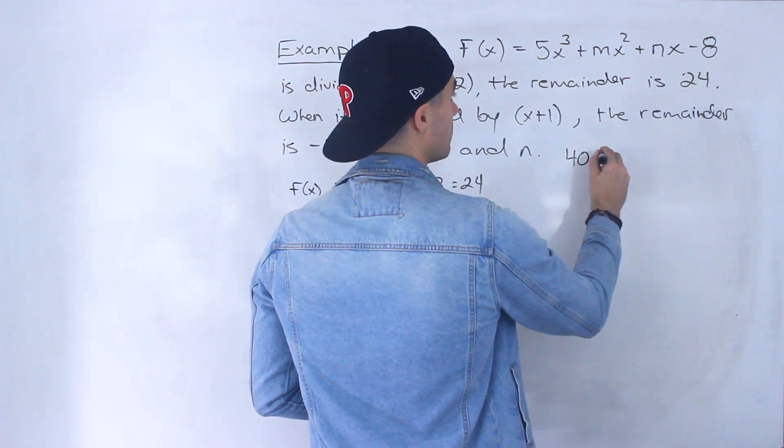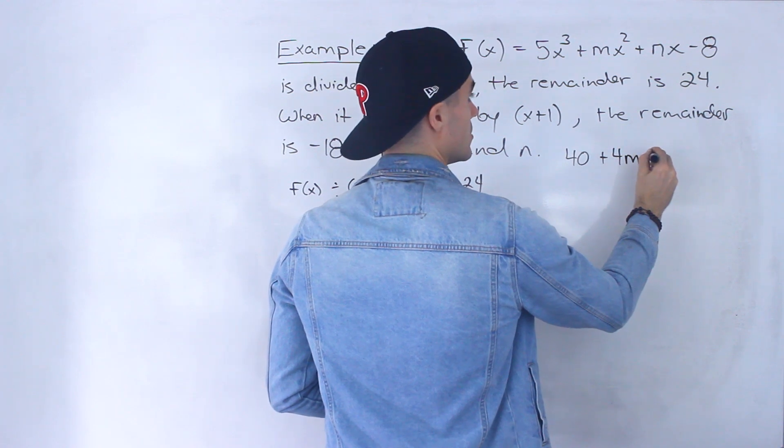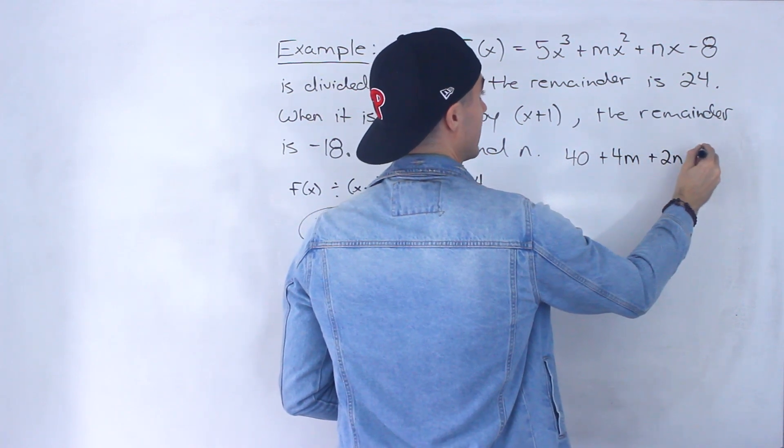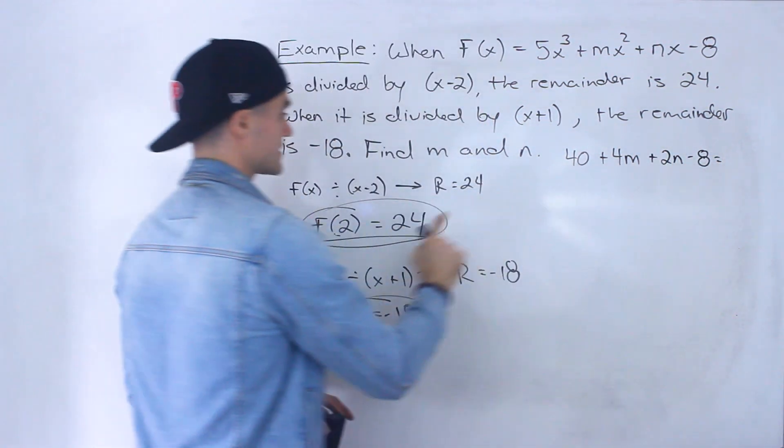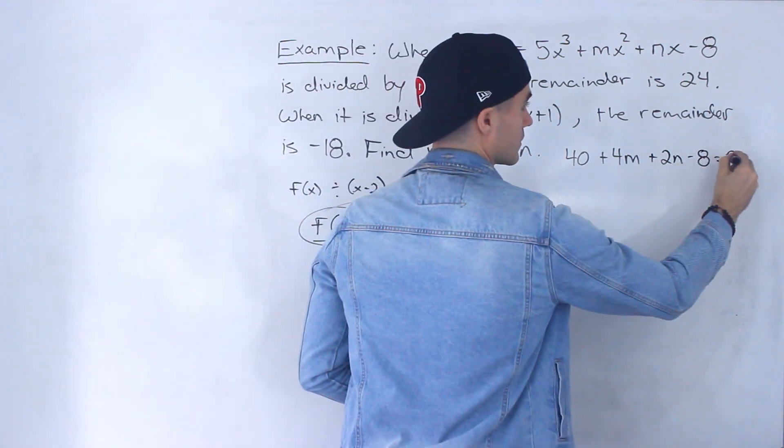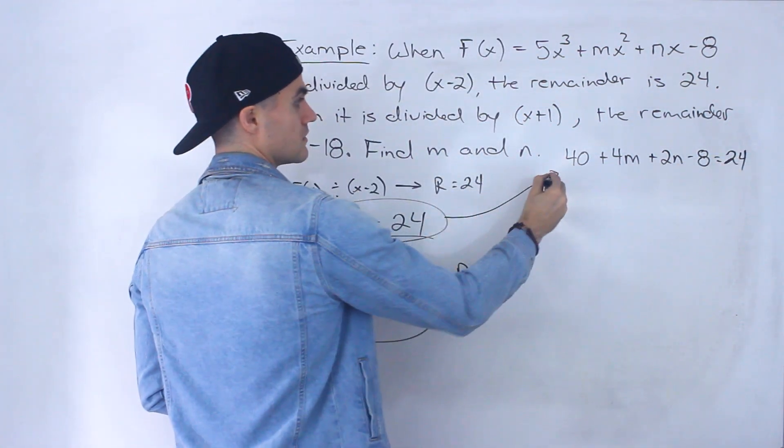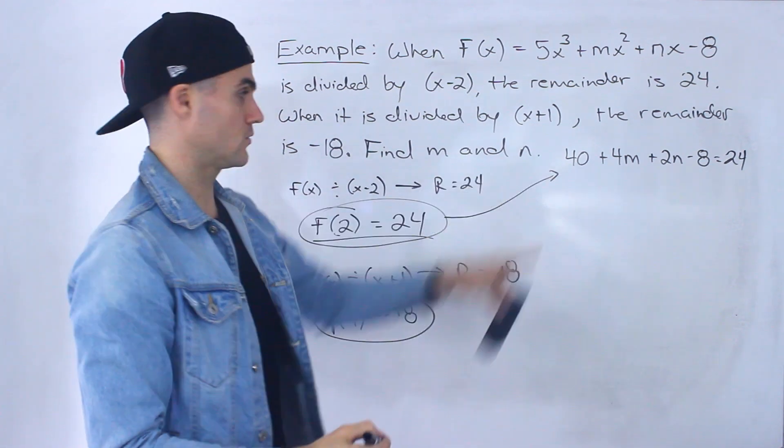So we would have 40 + 4m + 2n - 8, and that has to equal 24. So I made that equation right there.